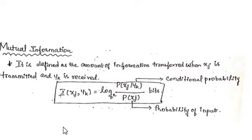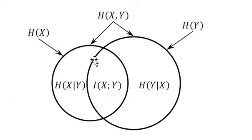Mutual information is actually very closely linked to entropy, because it can also be understood as the reduction of uncertainty of a random variable. Let us see the relationship between mutual information and entropy.